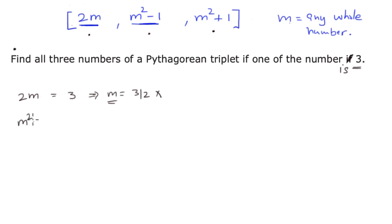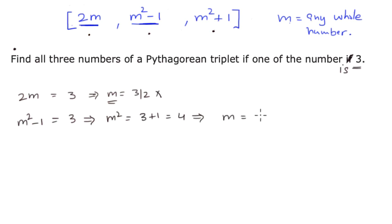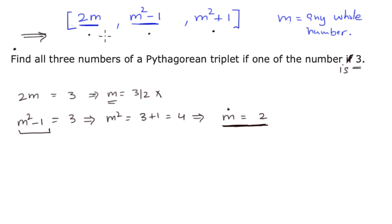If 2m equals 3, we find that m will be 3 over 2, and that cannot happen because we want m to be a whole number, so this won't work. Let's try the second one: m squared minus 1 equals 3, which gives m squared equals 4, and that implies m equals 2. So this satisfies. We can find a whole number m such that m squared minus 1 equals 3. Now we substitute m equals 2 into the method to get our three numbers.